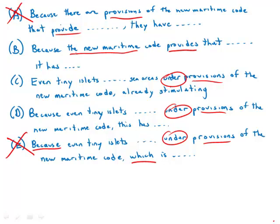In D, the word this, the antecedent of this is not clear. Really, this could refer to the situation. It could refer to the provisions. It could refer to the maritime code.